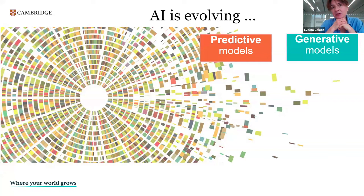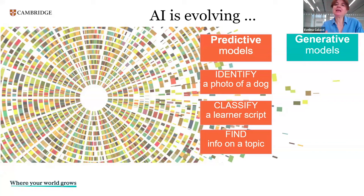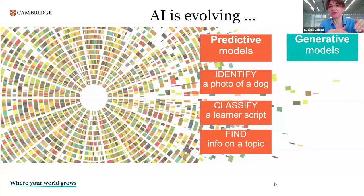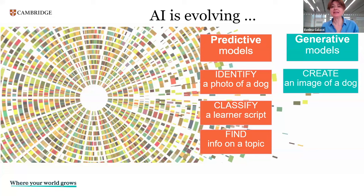In a predictive model, for example, you could give photographs of animals to the AI model and say, identify the photo of a dog, and the AI model would select the photos of a dog. You could also give it something a student has written and ask the AI to classify that writing against a scale, for example the Common European Framework of Reference. Or you could ask it to find information on a topic — like the closest Brazilian restaurants in your neighborhood, and it would give you lots of links. Those are predictive models. They're very good at predicting information.